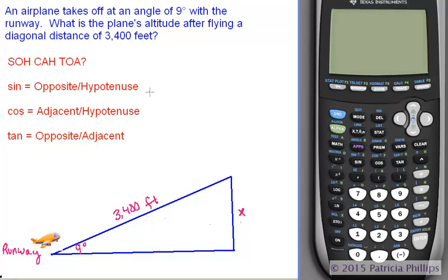What do I have labeled? And how can I use this in order to use the trig ratios to solve this problem? With our diagram today, we have the angle of 9 degrees labeled. We have the side opposite of that angle labeled as x, our missing altitude. And we have the hypotenuse labeled as 3,400 in feet because that is the distance that the plane flew.